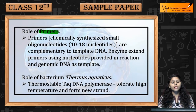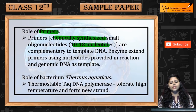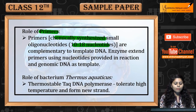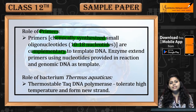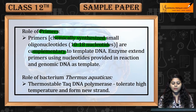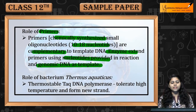Now coming to primers. Primers chemically synthesized small oligonucleotides हैं, which are 10 to 18 nucleotides long. They are complementary to template DNA — template DNA के complementary base pairs present होते हैं primers में. Enzymes extend करते हैं primer को, using nucleotides provided in the reaction and genomic DNA as template.